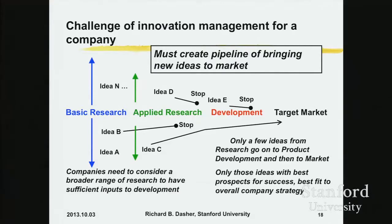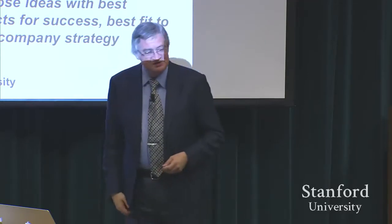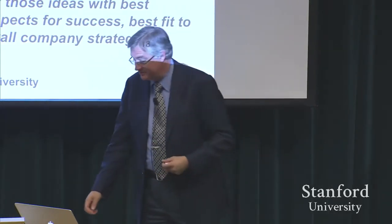From the standpoint of a big company, you have to have a pipeline of innovation — you can't live on one innovation forever. Most of the new ideas you have are never going to see the market; a company will only take the ones with the best prospects for success and the best fit to overall strategy. Companies spend 90% of their R&D budget in development — only about 10% in applied research and basic research. And yet you have to look at even more possible ideas further out so that you don't get stuck in a corner with your competitors.